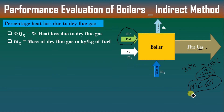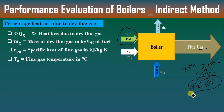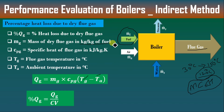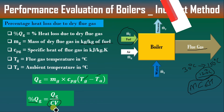Let the mass of dry flue gas be Mg and the specific heat of dry flue gas be Cpg. The temperature of dry flue gas is Tg and the ambient temperature is Ta. To find the heat carried by the dry flue gas: QG = Mg × Cpg × (Tg − Ta), in kJ per kg of fuel. To find the percentage of heat loss due to dry flue gas: percentage QG = QG divided by Cv (total heat available per kg of fuel).